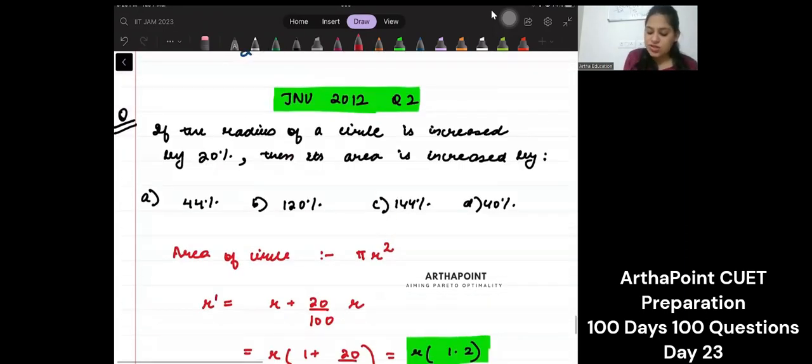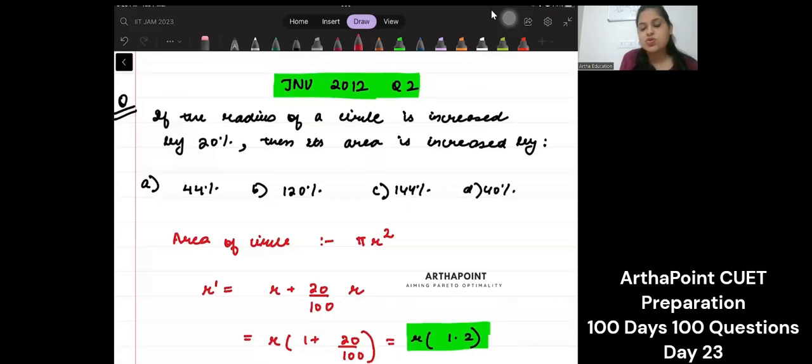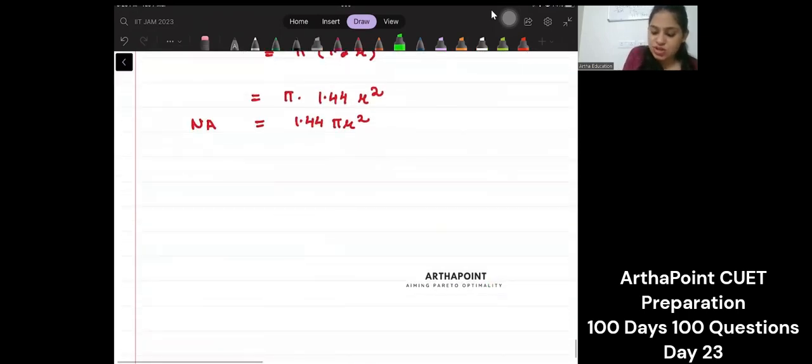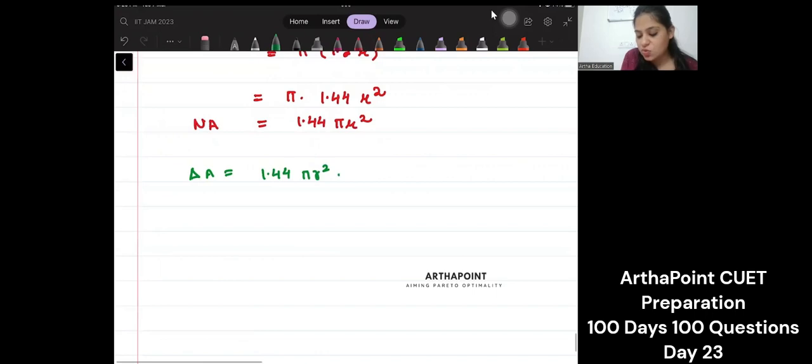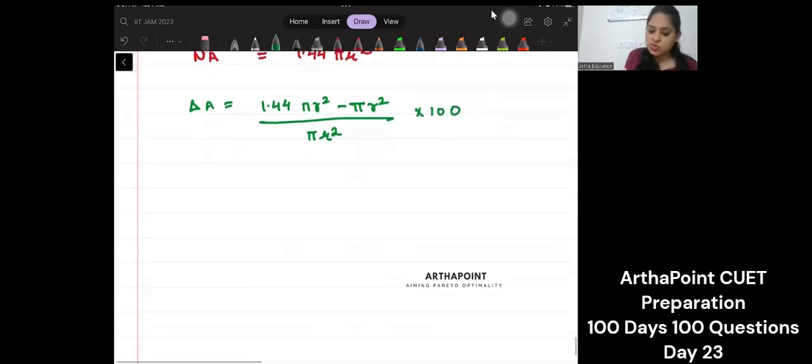Now, the question is asking in terms of percentage, so you have to answer in terms of percentage. It says its area is increased by. So change in area will be (new area minus old area) upon old area into 100. So this is going to be 0.44.